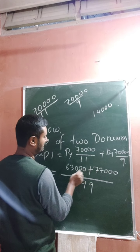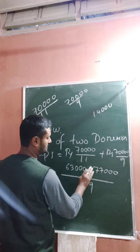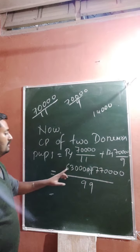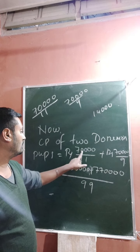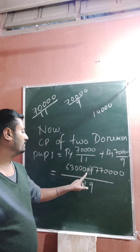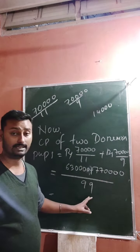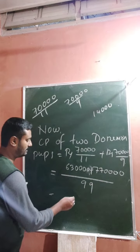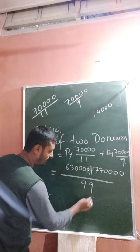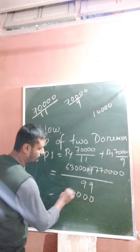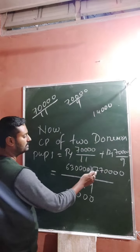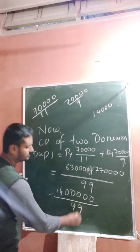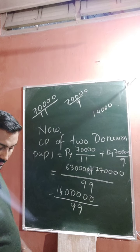Continuing the calculation: eleven times sixty-three thousand gives six lakh ninety-three hundred, and nine times seventy-seven thousand gives six lakh ninety-three thousand. Adding these together over ninety-nine to get the total cost price of both Doraemon parts, and comparing with the total SP of fourteen thousand to determine overall profit or loss.